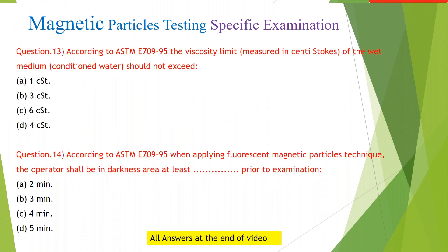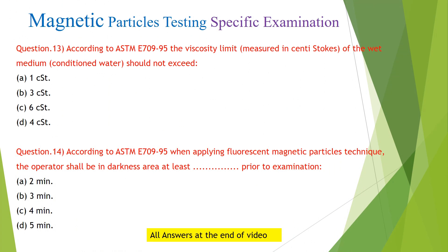Question 13: According to ASTM E709-95, the viscosity limit of the wet medium should not exceed: (A) 1 cSt; (B) 3 cSt; (C) 6 cSt; (D) 4 cSt.